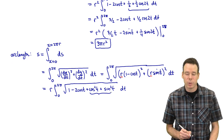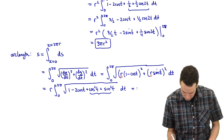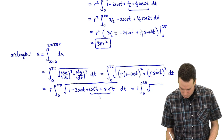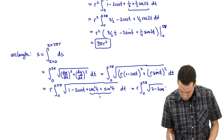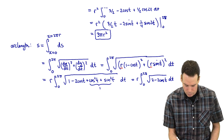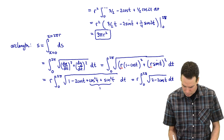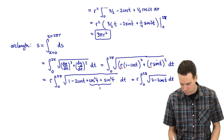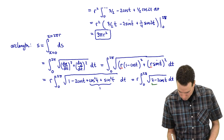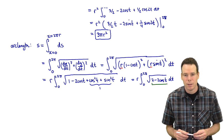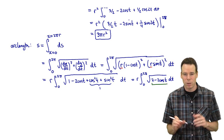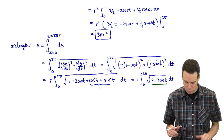Since sin²t plus cos²t equals 1, the expression under the square root simplifies to 2 minus 2cos t. We now have r times the integral from 0 to 2π of √(2 minus 2cos t) dt. To handle this, we want to make the expression under the square root a perfect square so it cancels with the square root, avoiding an integral involving a square root.